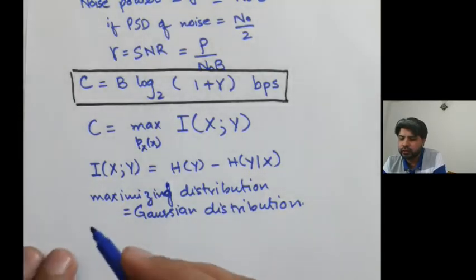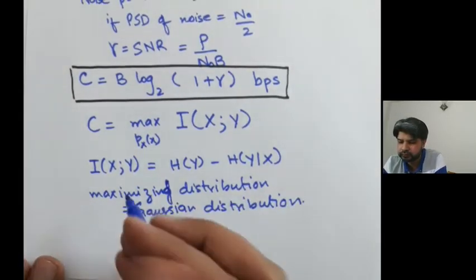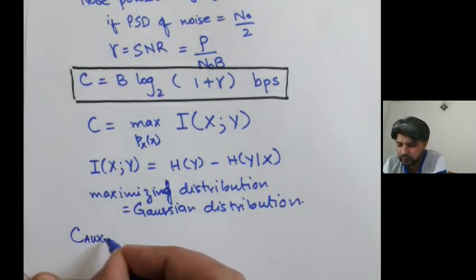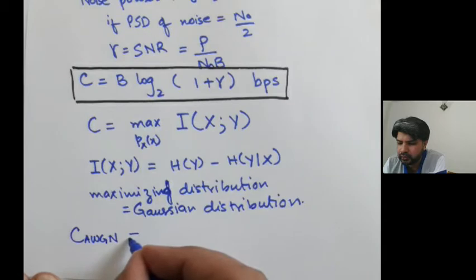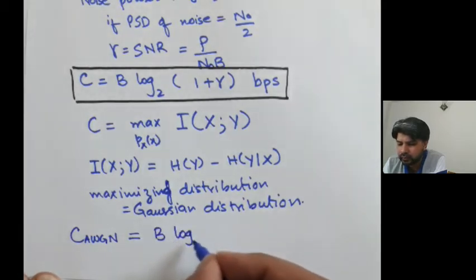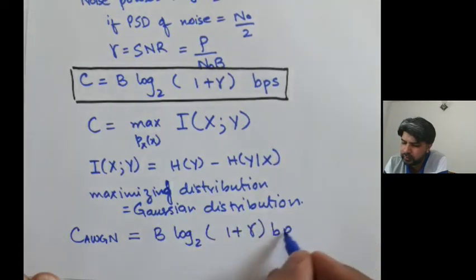And this capacity we would always denote as C AWGN equals to B log base 2 of 1 plus gamma bits per second.